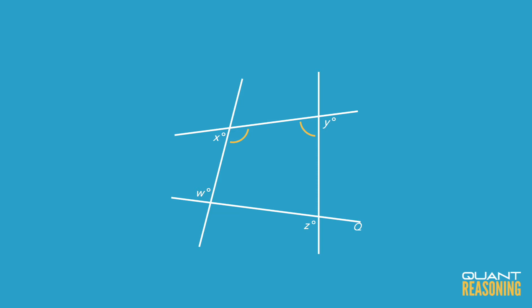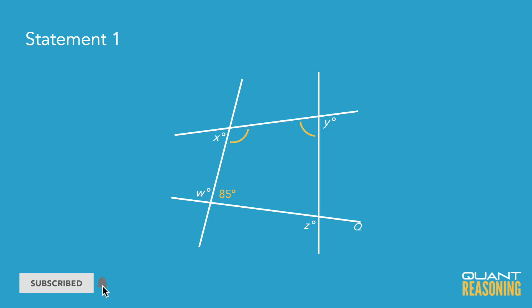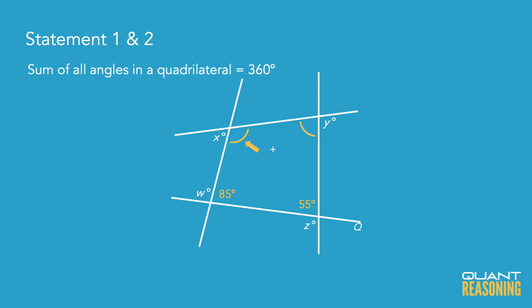So if we can find the sum of those two yellow angles, we'd be able to infer the sum of X and Y, which is what the question is asking about. Statement one can't possibly be sufficient on its own because it just gives us angle W, which allows us to infer 85 next to it, but that's about it. Statement two is not sufficient on its own either for the same reason. But when we combine these statements, we can infer the sum of the two yellow angles, and from there we can infer the sum of X and Y.